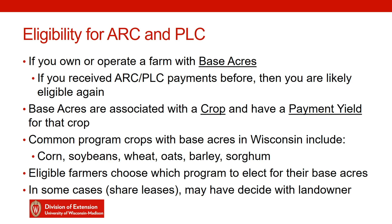These base acres are always associated with the crop and have a payment yield for that crop as well. The common program crops in the state of Wisconsin are corn and soybeans, as well as small grains like wheat, oats and barley, and some people have sorghum base acres. These will also have payment yields with them.